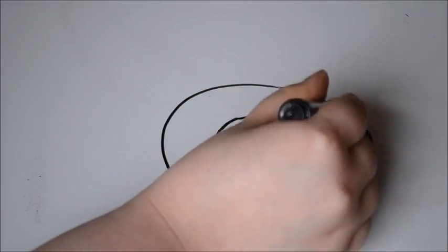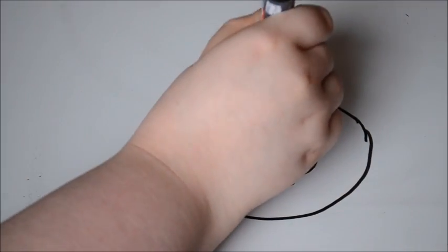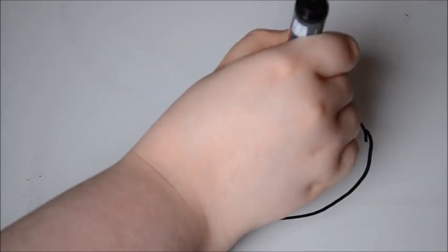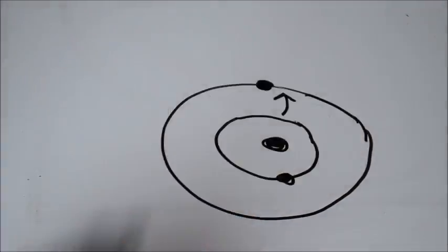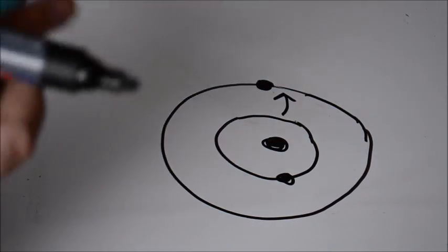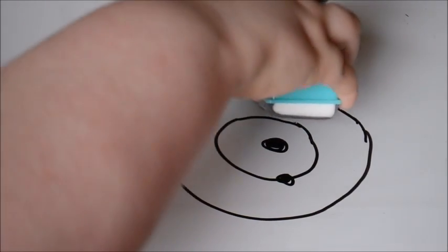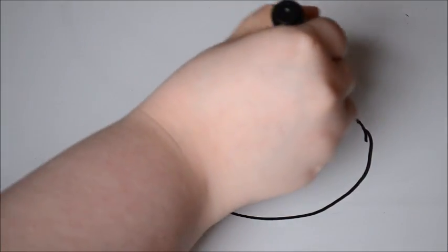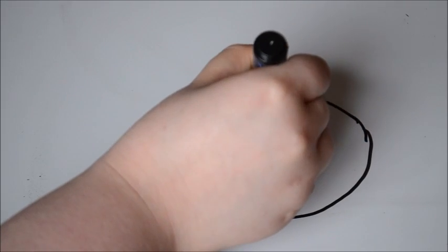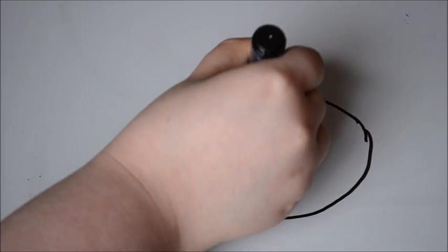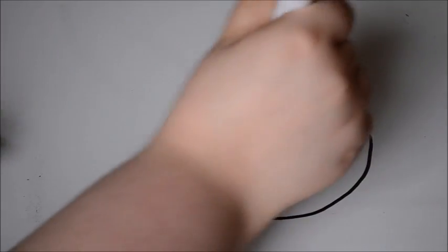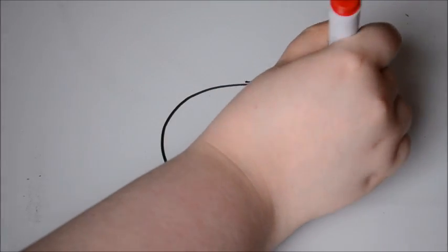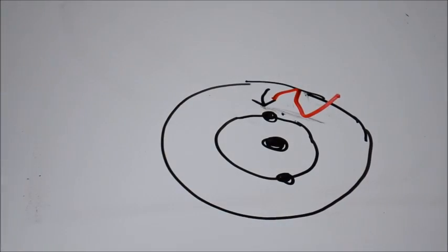The electron then jumps, because of its greater energy, to the outer energy level. Then, when it loses its energy through things such as vibrations, it falls back to the lower energy level. This then releases energy in the form of colour.